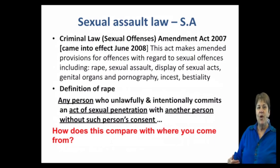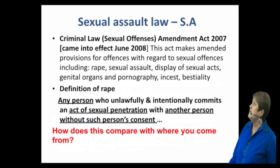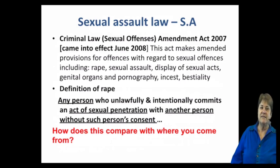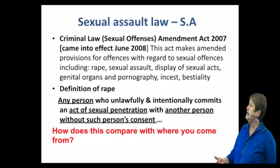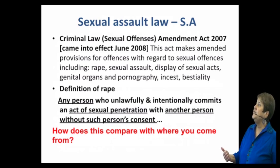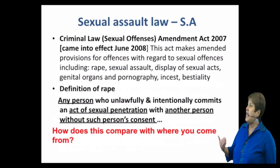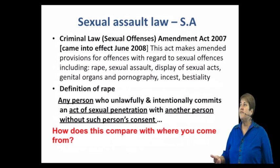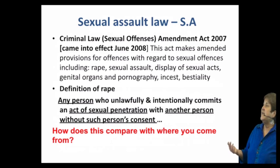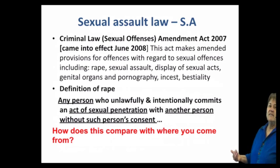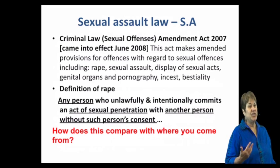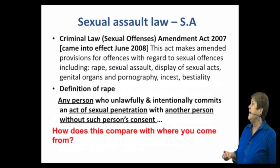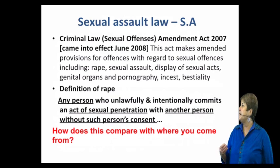The Criminal Offences Amendment Act covers rape, sexual assault, display of genital organs and pornography, incest, and bestiality. The definition of rape is any person who unlawfully and intentionally commits an act of sexual penetration with another person without their consent — it doesn't have to be penis to vagina, and it includes marital rape. I'd like you to consider how this compares to your country: is the definition as broad, and is marital rape included?